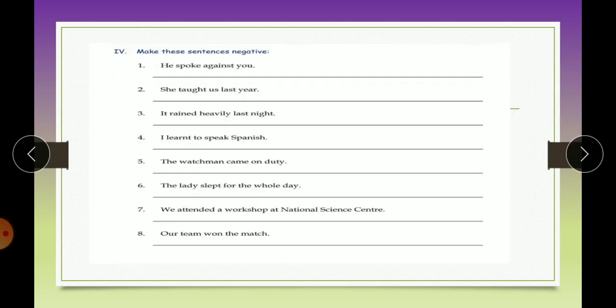Now make these sentences negative. Children, negative sentences you already know - they have not in them. And when you are changing any sentence of simple past tense into negative, we are using did not. And with did not, we have to use the first form of the verb. So the easiest way is, first find out the verb and underline them. Like in the first sentence, he spoke against you. Spoke is the verb. So you have to change the verb. Spoke ko hume speak mein change karna hai. So he did not speak against you.